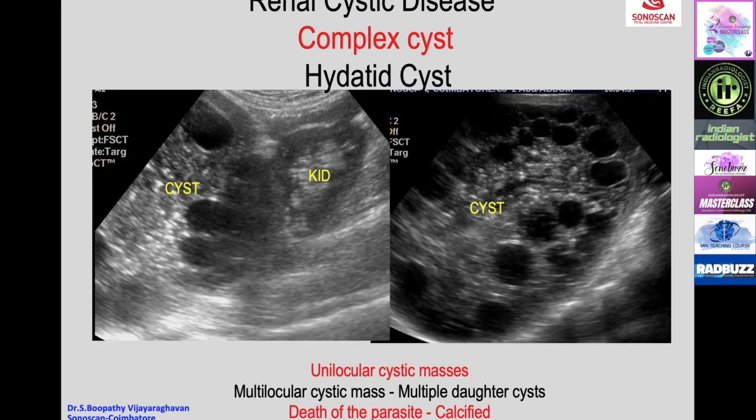Another differential diagnosis for a cyst is hydatid cyst. In the kidney, a hydatid cyst may appear as a unilocular cystic mass—difficult to differentiate from a simple cyst—but usually it is multilocular due to multiple daughter cysts within, giving a characteristic appearance. With the death of the parasite, the cyst wall becomes calcified.